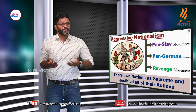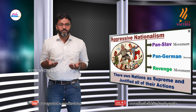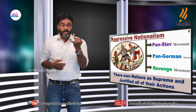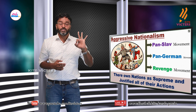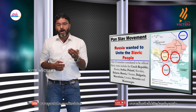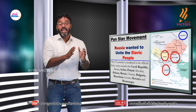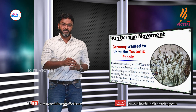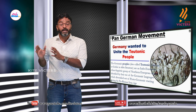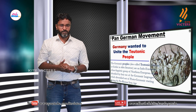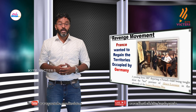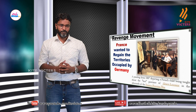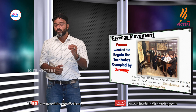There were three major aggressive nationalist movements in Europe at the time. The first was the Pan-Slav movement, led by Russia, with the aim to unite the Slavic people. The second was the Pan-German movement, led by Germany to unite the Teutonic people and become the major country of Central Europe. The third was the Revenge movement, led by France to regain Alsace-Lorraine, which had been captured by Germany.